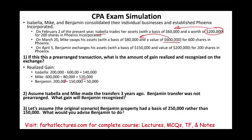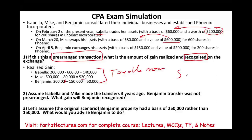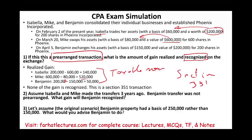The question also asks how much of the gain is recognized — in other words, how much is taxable now. If this was a prearranged transaction, it means this is Section 351. How much of that gain is recognized? The answer is none. None of the gain is recognized since this is a Section 351 transaction. So we've answered three questions: the amount realized, amount recognized, and whether this is a Section 351 transaction.